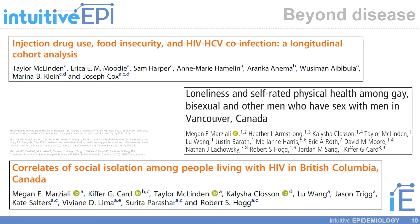I also wanted to show you some examples from my own research. The first paper at the top relates to injection drug use — a behavior — and food insecurity, a social determinant of health, and I examined the relationship between these factors among a group of people living with HIV and hepatitis C virus co-infection in Canada.